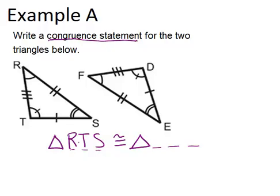We started with R, and angle R matches with angle F, and we can tell that by the angle markings, they each have one arc. So that means I have to start with F for my triangle on the right.